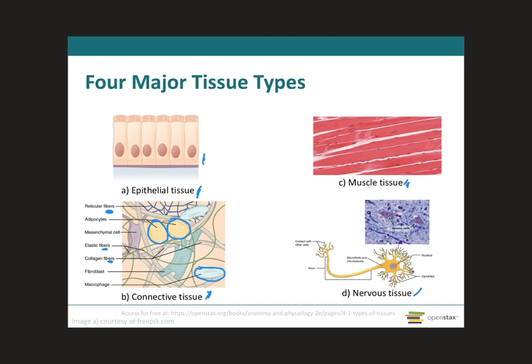Next, we have the muscular tissue, which is composed of cells that are specialized for contraction and generation of force. In the process of contraction and causing force, it will generate heat as well, which is important to keep the body warm and contribute to homeostasis. Then we have the nervous tissue, which is important to detect changes in a variety of conditions, either inside or outside of the body. It will respond to these conditions by generating an electrical signal, also called a nerve action potential or nerve impulse. These nerve impulses, when stimulated, will activate muscular contractions and glandular secretions.